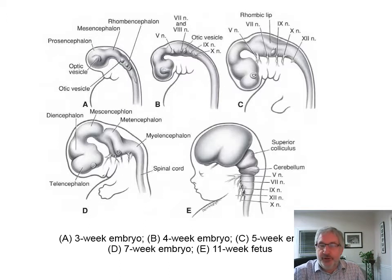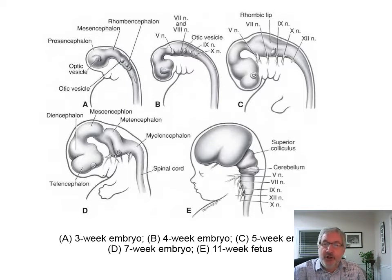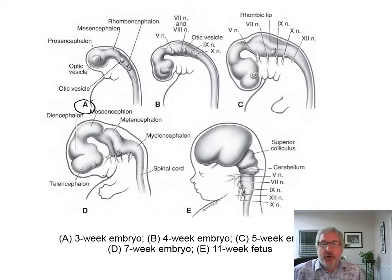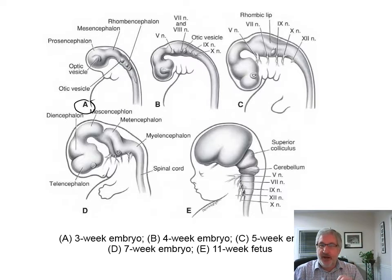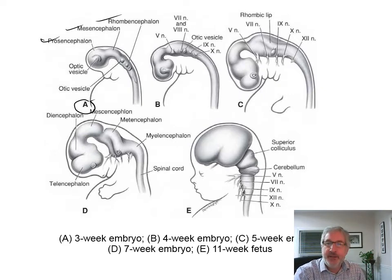Here's what you actually look like at different weeks. A three-week embryo is up here in A — a kind of sperm-looking figure. You have an optic vesicle, a prosencephalon which is going to be the brain, the midbrain, and the hindbrain. Those three pieces are there. Then at four weeks there's a little bit of definition, and some of the cranial nerves start forming.